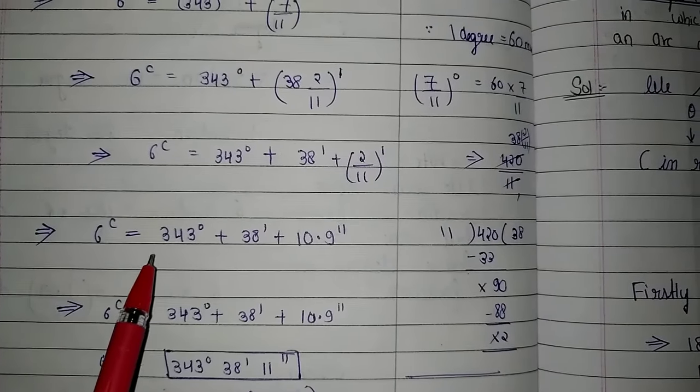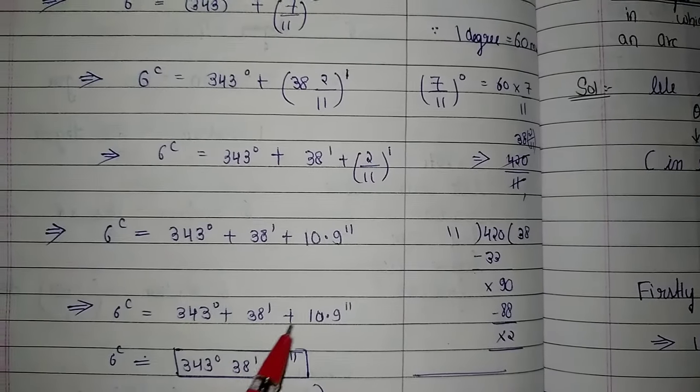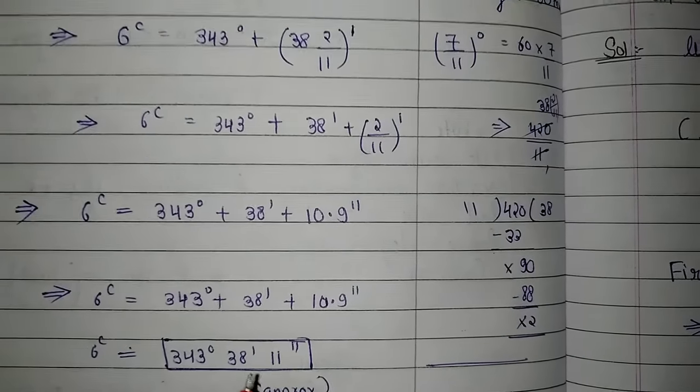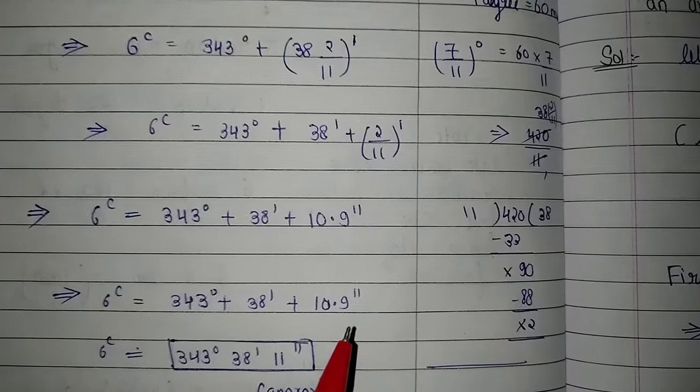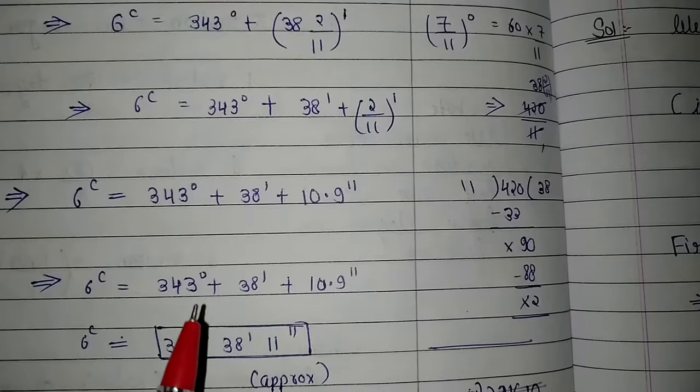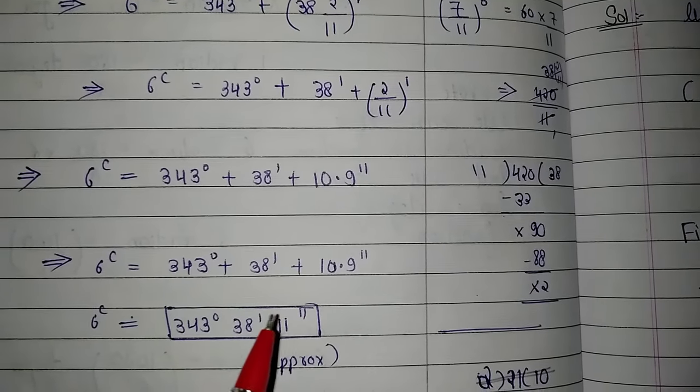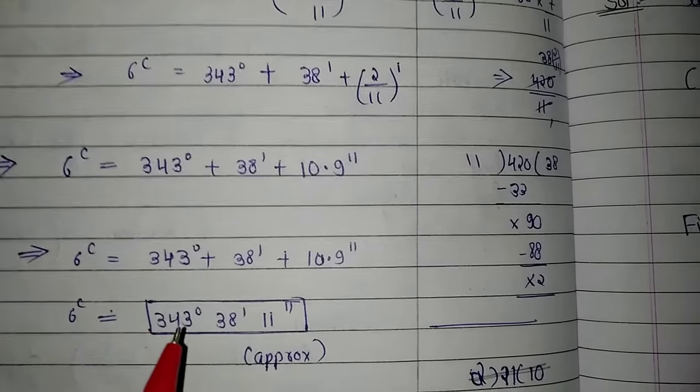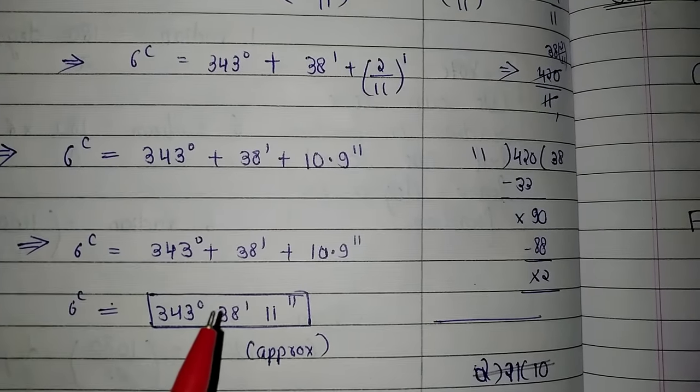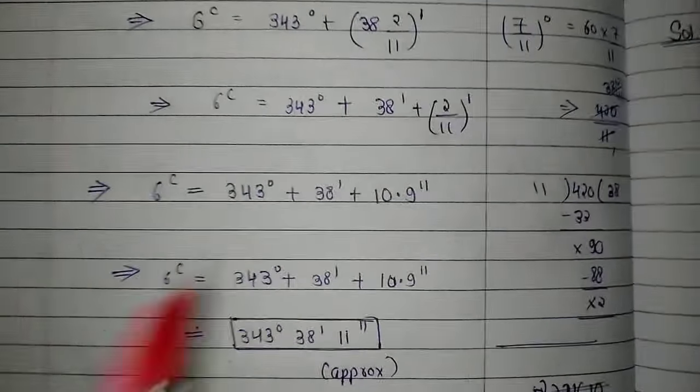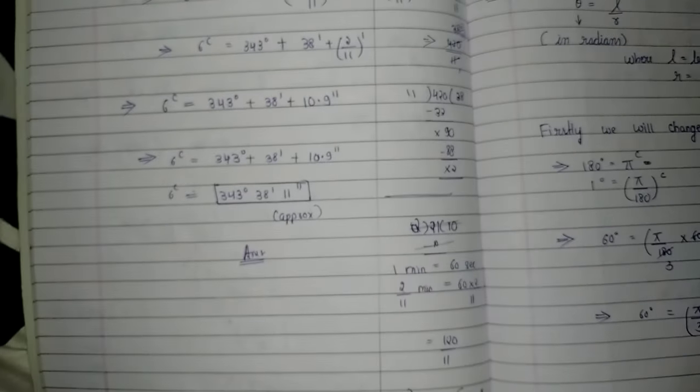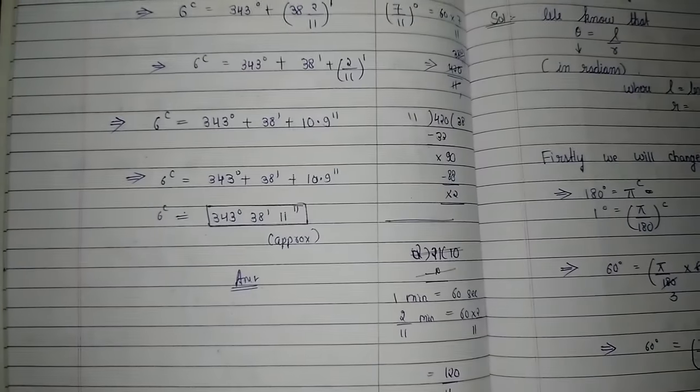We write this all together. Since it's not exact, we don't need to remove the plus sign. So we are writing the total as 343 degrees, 38 minutes, and 11 seconds. This will become our answer. You can do the whole thing in the rough as I have shown what I have done.